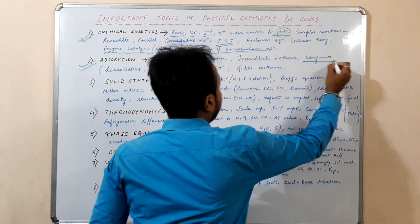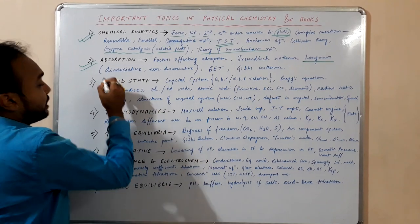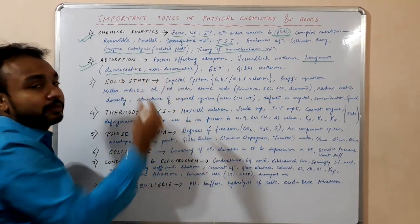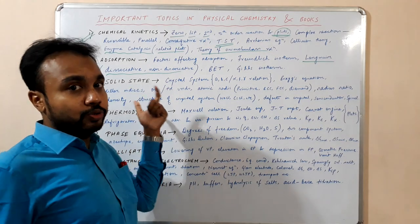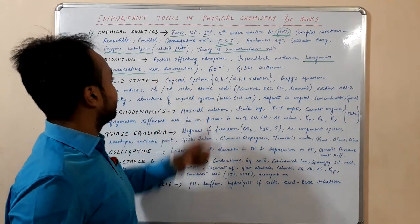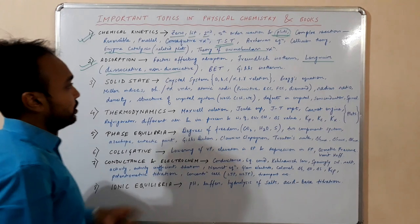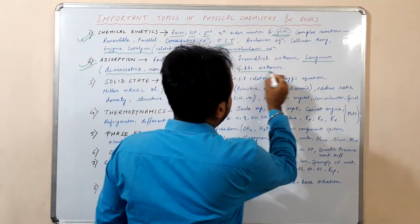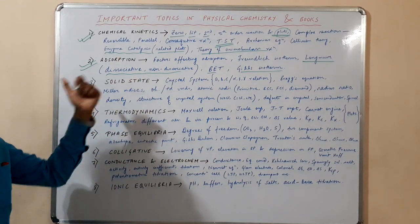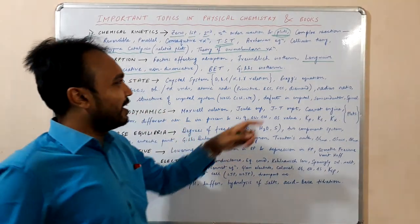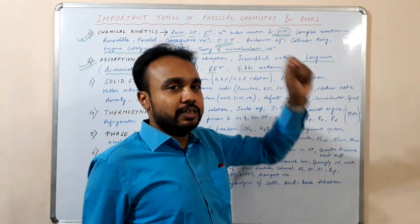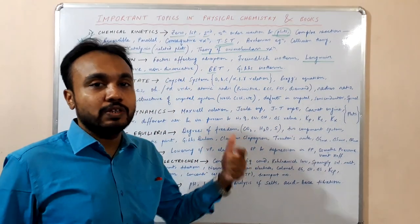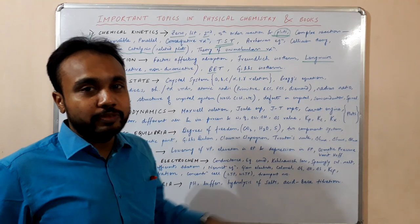The Langmuir isotherm is the important part — both dissociative as well as non-dissociative cases. Dissociative means in the case of ozone or similar molecules, and non-dissociative molecules you have to study also. Then the BET isotherm and Gibbs isotherm. Other things like emulsion, sol, aerosol, and gel — just take a look at these.